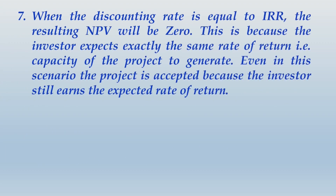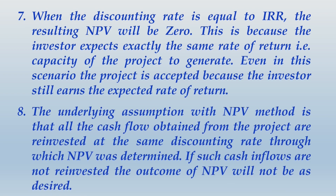When the discounting rate is equal to IRR, the resulting NPV will be zero because the investor expects exactly the same rate of return that the project is capable of generating. Even in this scenario the project is accepted, because the investor still earns the expected rate of return.